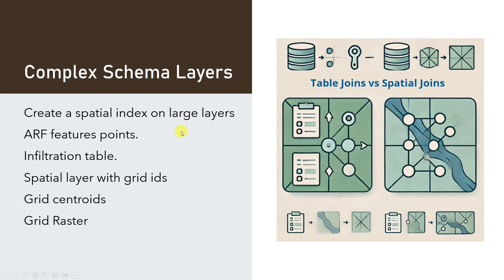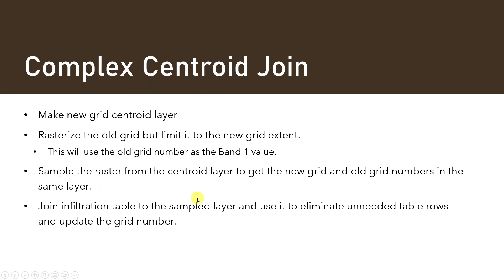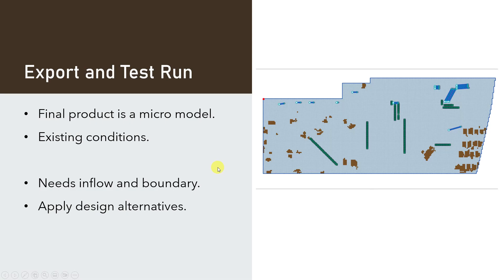We're going to learn about spatial and table joins. We'll use ARF points within individual grid elements to rebuild the grid element numbers in our ARFs. For the infiltration table, we'll do a table join to our original grid and then use that to run the SCS calculator again — that's the easiest way to do it. We don't need some of these layers because I've simplified these methods, so we'll skip the complex centroid join. Then we'll export and do a run to make sure everything works.